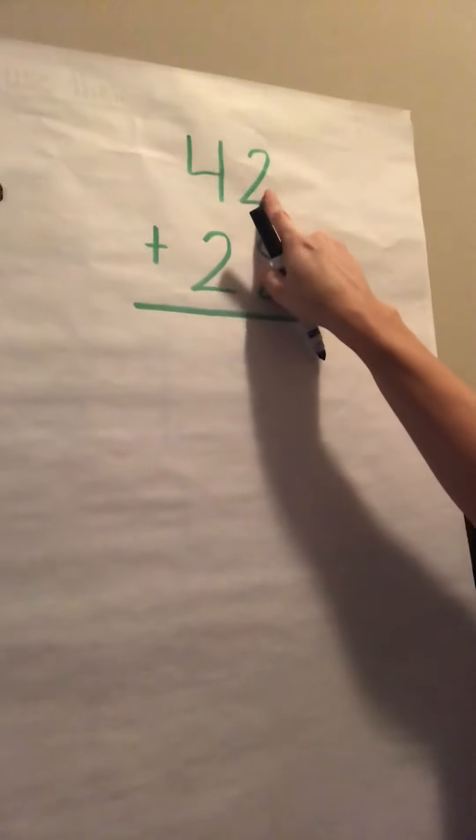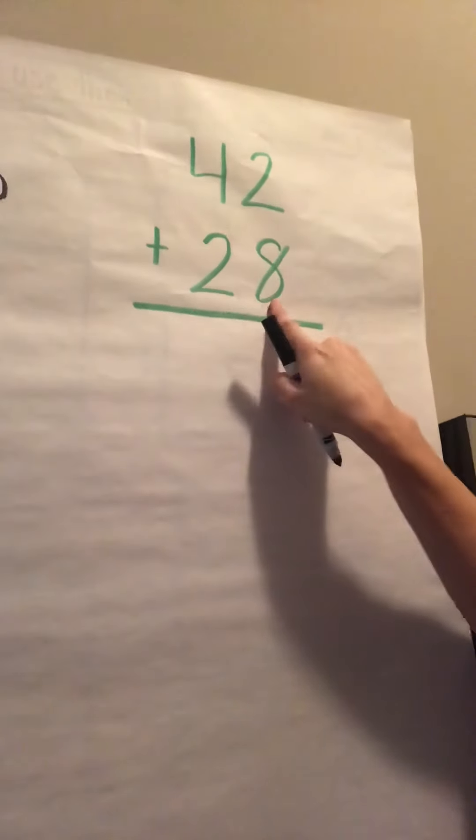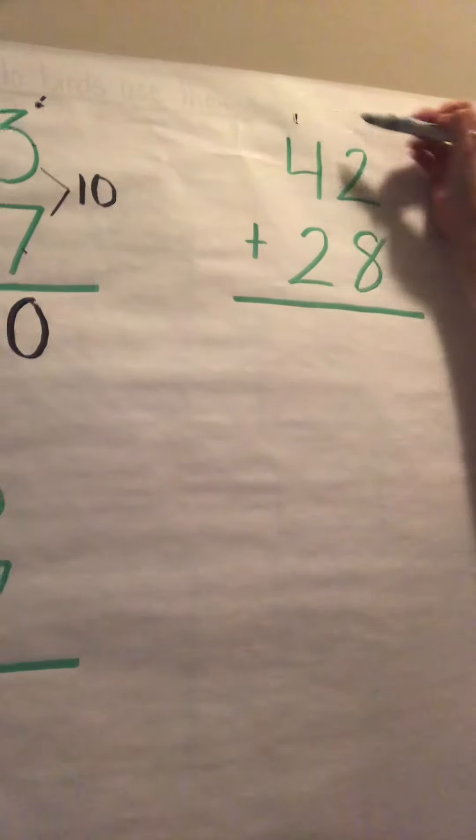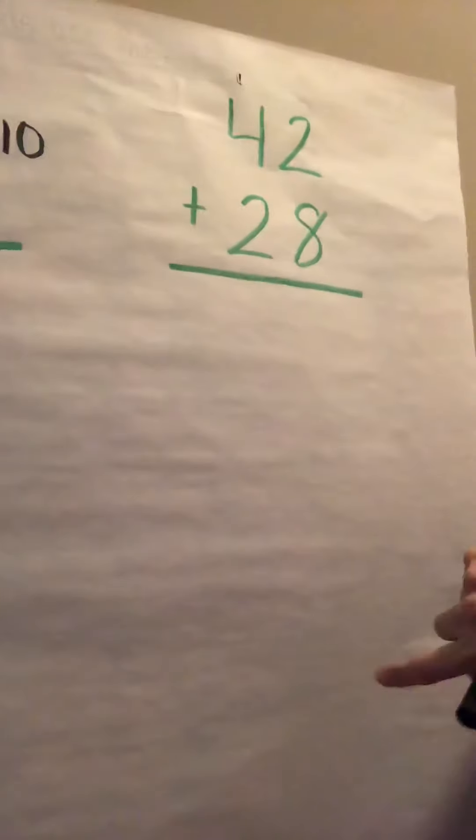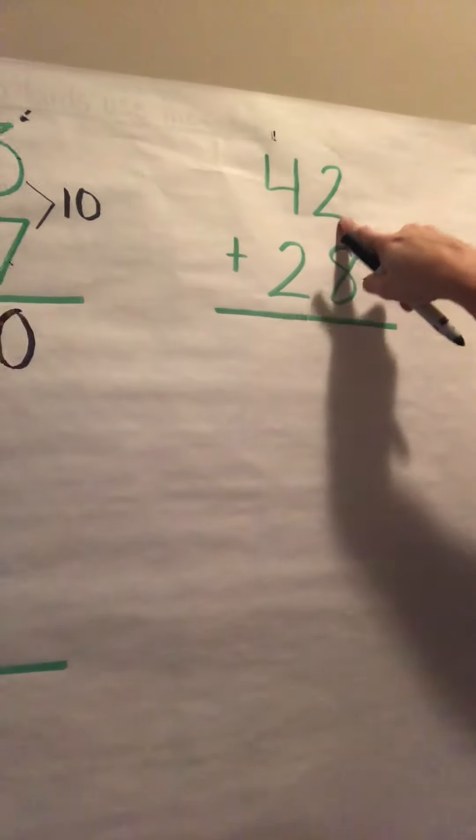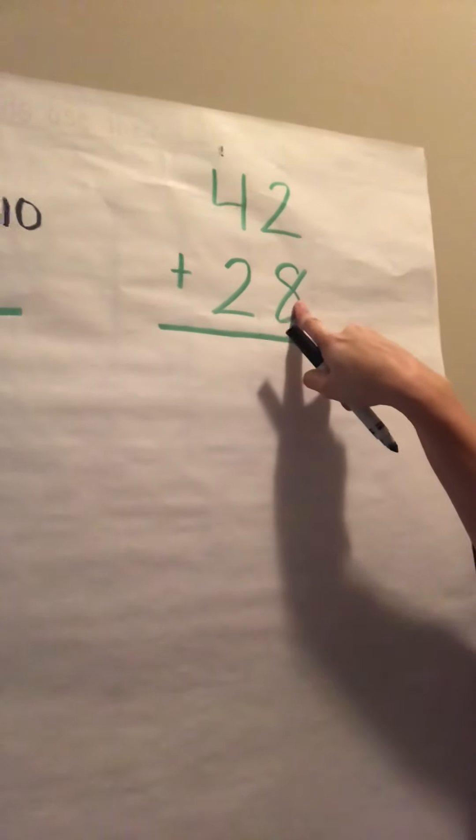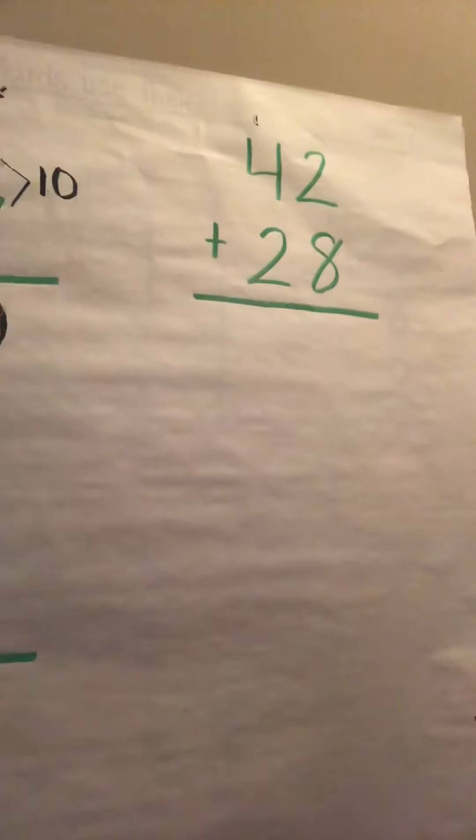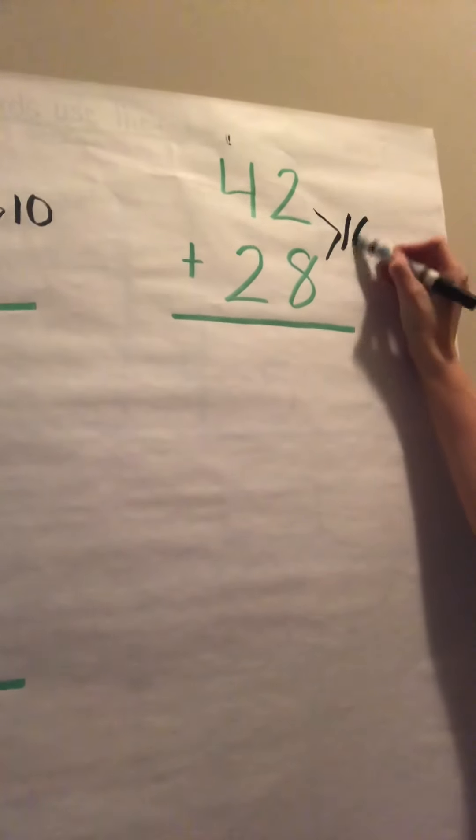Okay, here we go. We have 42 plus 28. Again, which side are we going to work on first? The left or the right? Right, we start on the right side in our ones place. We have our 2 plus our 8. 2 plus 8 equals? Right, this equals 10 again.